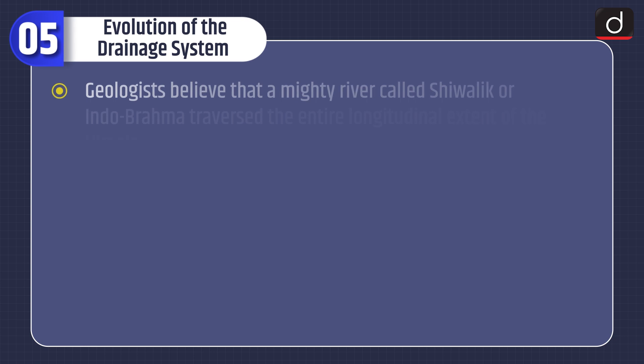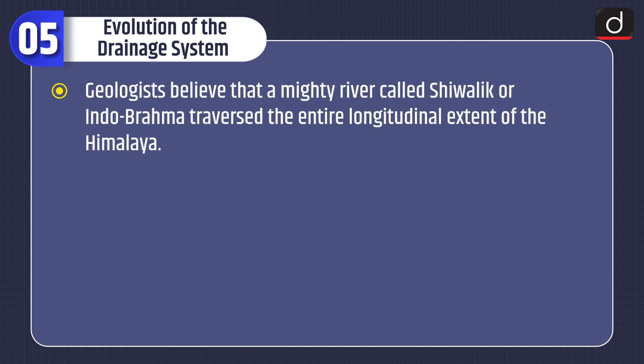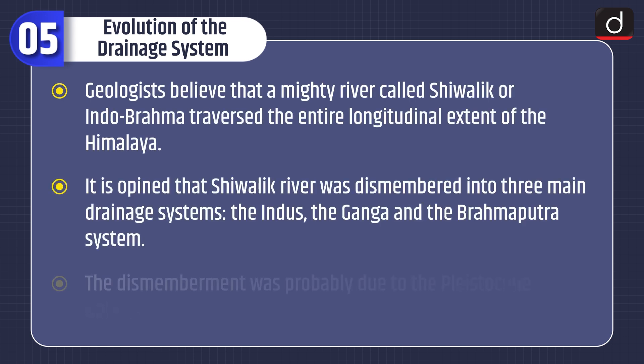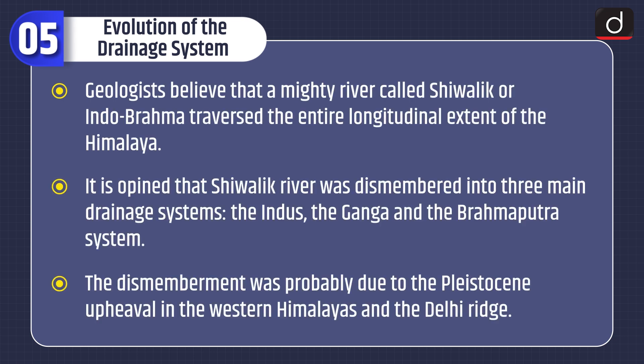Regarding the evolution of the drainage system, geologists believe that a mighty river called Shivalik or Indo-Brahma traversed the entire longitudinal extent of the Himalaya. It is opined that this Shivalik river was dismembered into three main drainage systems — the Indus, the Ganga, and the Brahmaputra — probably due to the Pleistocene upheaval in the western Himalayas and the Delhi Ridge.